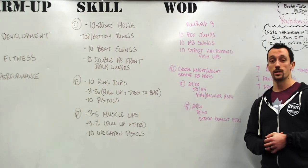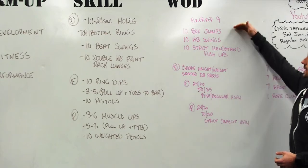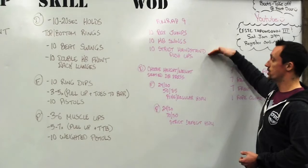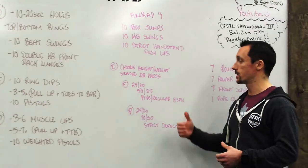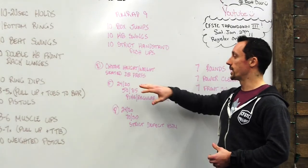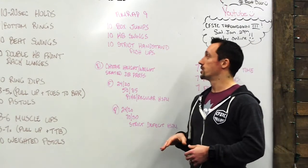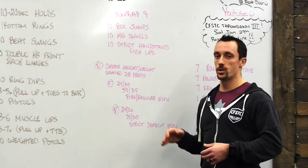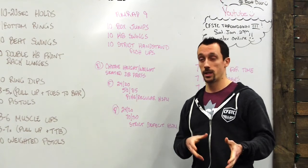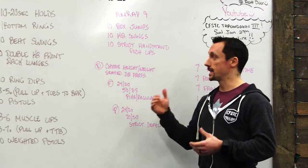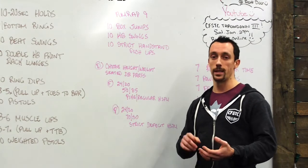Let's move into some conditioning — here's Monday's workout: a nine-minute AMRAP of 10 box jumps, 10 kettlebell swings, and 10 strict handstand push-ups. On the board you'll see that in the development stream it says to choose your weight and height, and do a seated dumbbell press for the strict handstand push-up component. The goal is to pick a weight and box height that lets you keep moving for the full nine minutes.